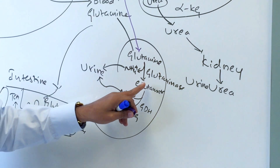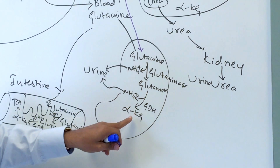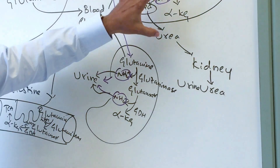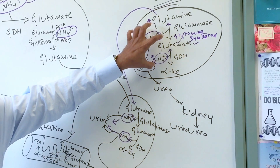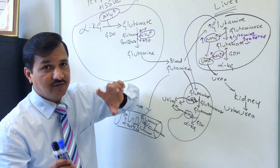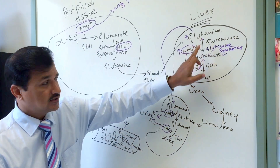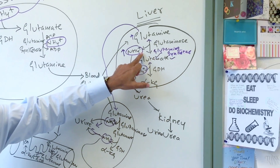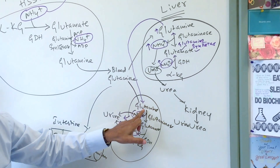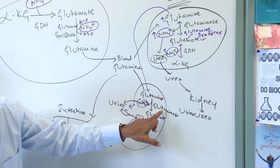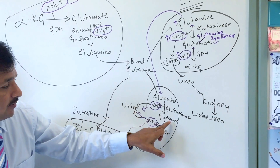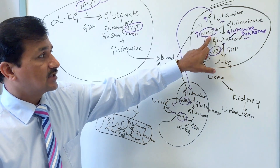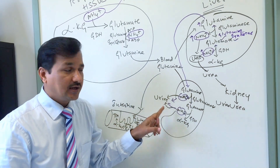In the kidney, glutaminase breaks glutamine into glutamate, and glutamate dehydrogenase converts it to alpha-ketoglutarate — both releasing ammonium ion into the urine. This means when the urea cycle is saturated and excess ammonium accumulates in the liver, the liver packages it as glutamine, ships it to the kidney, and the ammonium is excreted directly in the urine.